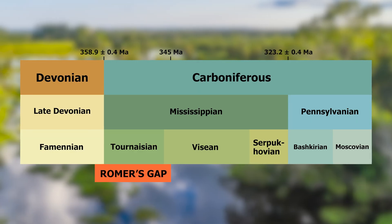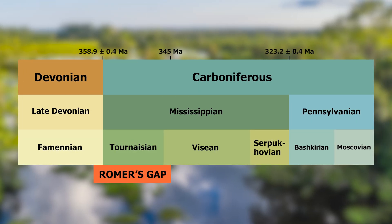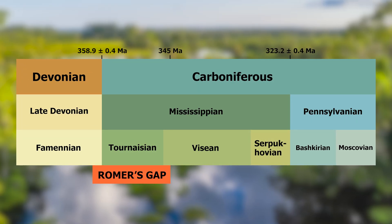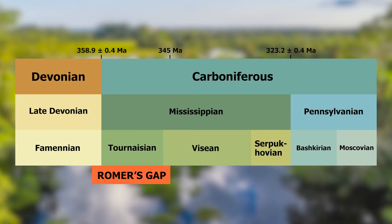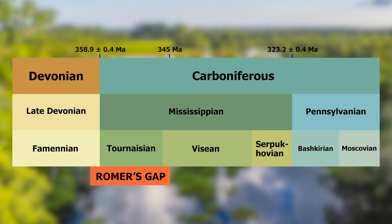And then there's the other, even more damning evidence against this argument. As it turns out, Roma's gap probably never even existed. The alternative explanation for the gap was that the missing record is not a true biological signal, but instead a result of sampling bias.